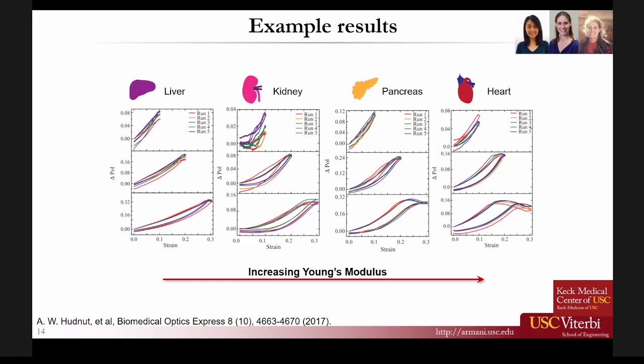Any advice for an early career researcher who wants to seek out collaborators, domestically or internationally? First, if you're an early career researcher, I would recommend the early career PI Slack as well as future PI Slack - I think both of those are great. I'm a member of mid-career Slack. I also found a lot of friends on Twitter, strangely enough - I never thought I'd actually be saying that.